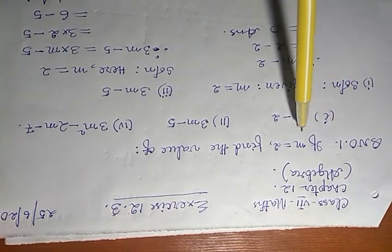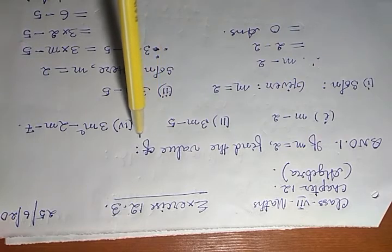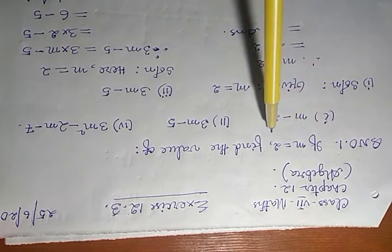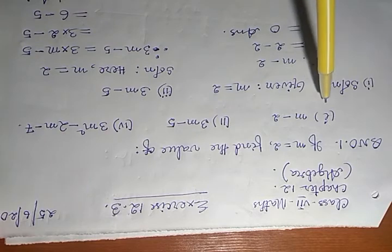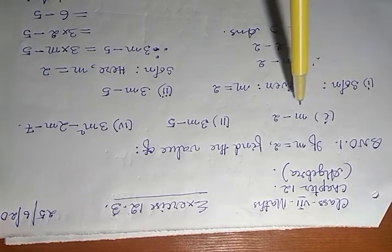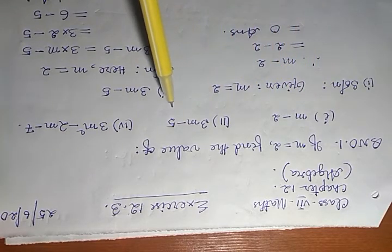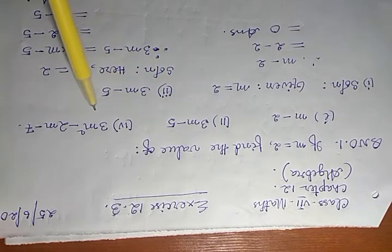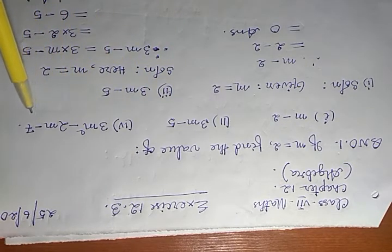If m equals 2, find the value of: Roma number 1 — m minus 2; Roma number 2 — thrice m minus 5; and Roma number 4 — thrice m squared minus twice m minus 7.